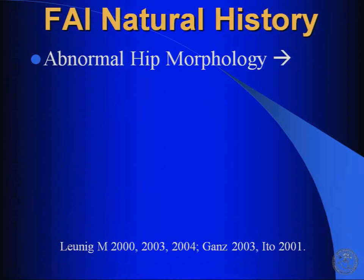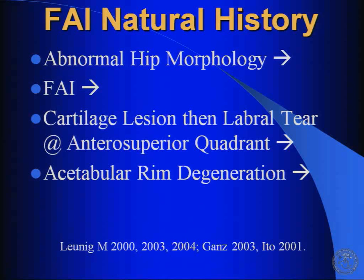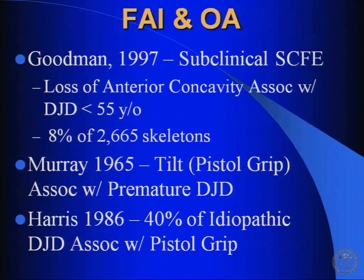The presumed natural history of an FAI patient, according to the Swiss group, is that the abnormal hip morphology leads to impingement that leads to articular cartilage damage, rim degeneration, and potentially global arthritis. In the literature, people have talked about the anatomy of impingement being associated with arthritis. Goodman described subclinical slipped capital femoral epiphysis and this loss of concavity — what you'd see with CAM impingement — occurring frequently in those with arthritis under age 55. Murray in 1965 talked about the pistol grip deformity, which again looks like CAM impingement. And Harris said 40% of those with idiopathic arthritis had the anatomy of a pistol grip.